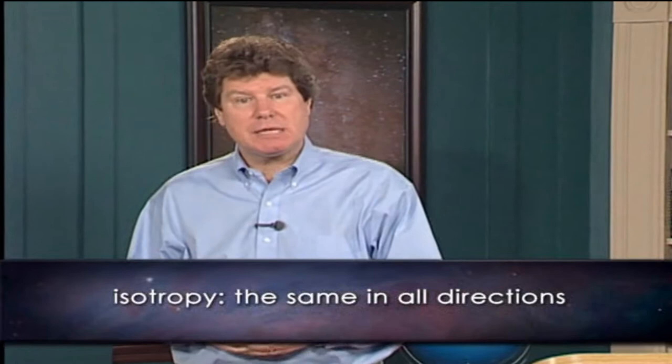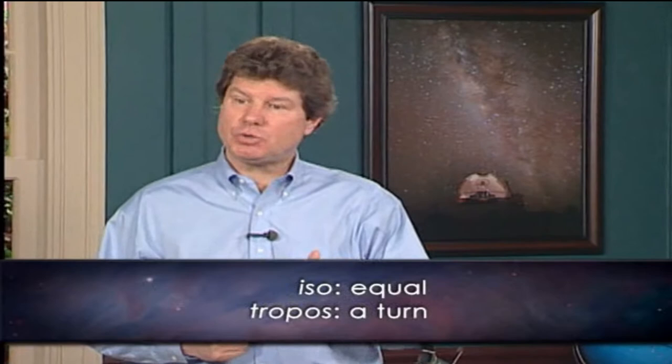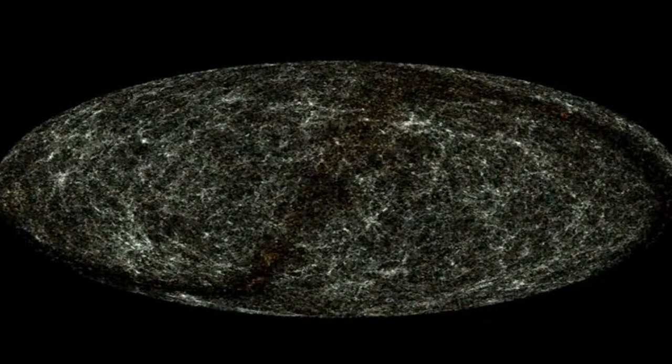Let's start with the first of these — isotropy, which means the same in all directions. From Greek: iso, meaning equal, and tropos, meaning a turn. It seems the universe is the same at all turns, in all directions. This is potentially confusing, because nearby, the universe clearly isn't the same in all directions. Down is the ground, up is the sky, the sun and moon are in specific directions, and even nearby galaxies are not uniformly spread about. In order to witness the isotropy, we need to look well beyond our local, lumpy universe. We need to look at much fainter, more distant galaxies.